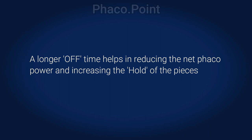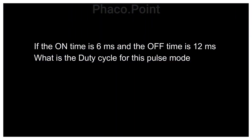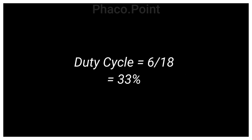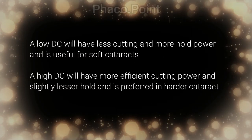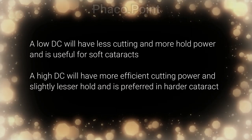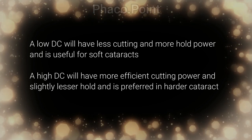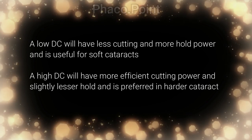A longer off-time will help not only in reducing the net FACO power but will also help to increase the holding ability of the FACO tip. For example, if the on-time is 6 milliseconds and the off-time is 12 milliseconds, the cycle time is 6 plus 12 or 18 milliseconds, hence the duty cycle is 6 divided by 18, or 33%. A low duty cycle will therefore have lesser cutting power but much better holding power and is generally useful for soft cataracts, while a high duty cycle will have more efficient cutting and is used for hard cataracts.